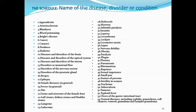The various diseases, disorders or conditions listed in the Schedule include blindness, blood poisoning, Bright's disease, cancer, cataracts, epilepsy, dropsy, fits, female diseases in general, sexual impotence, smallpox, tuberculosis, typhoid fever, ulcers of the gastrointestinal tract, venereal diseases including syphilis and gonorrhea, plague, and paralysis. These are the various diseases, disorders and conditions in the Schedule of the Drug and Magic Remedies Act.